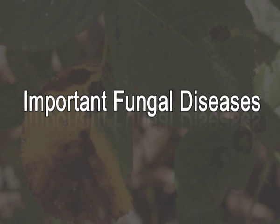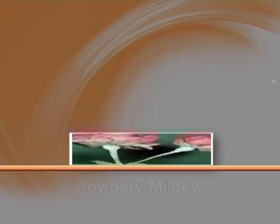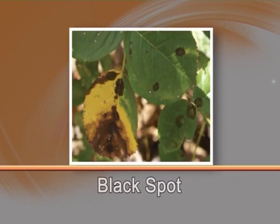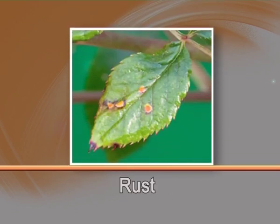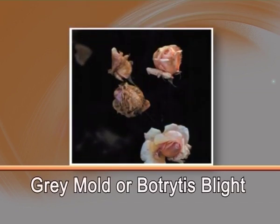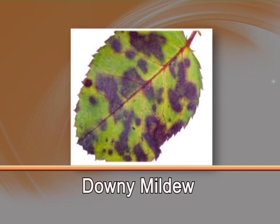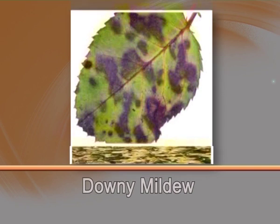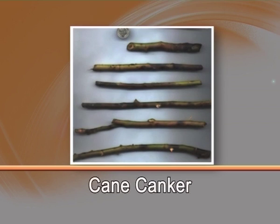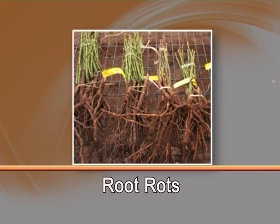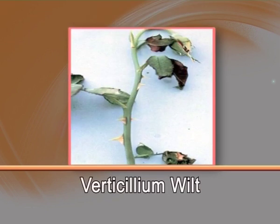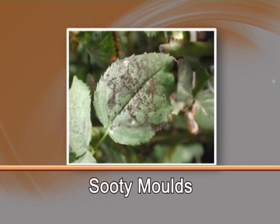Some of the important fungal diseases of rose are powdery mildew, dieback, black spot, rust, grey mold or botrytis blight, downy mildew, anthracnose, cane canker, root rot, verticillium wilt, and sooty mold.